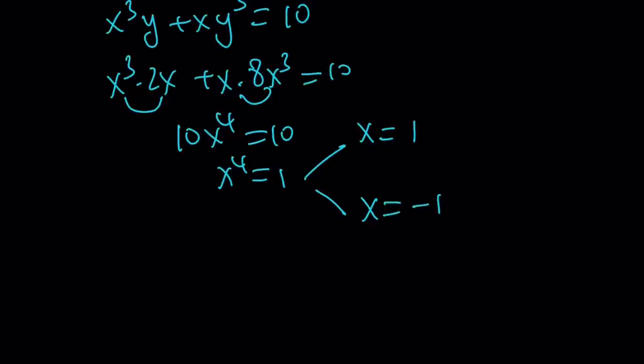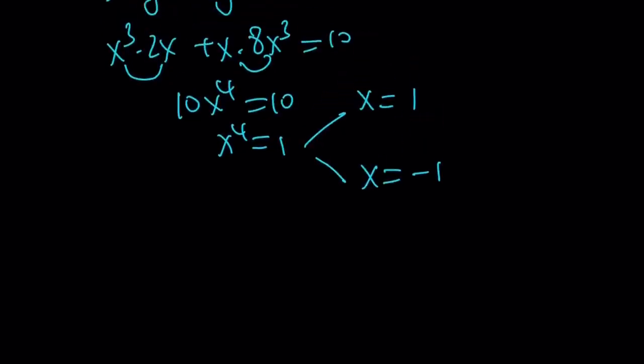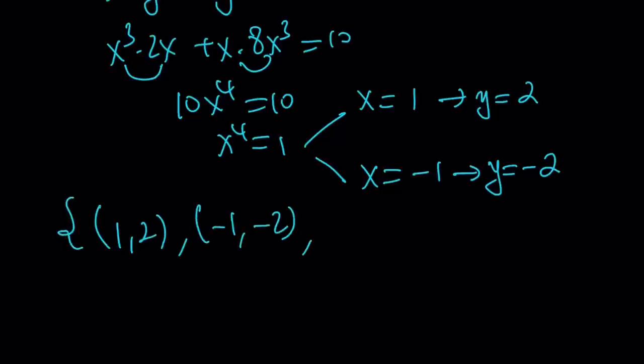Now, the -1 comes from the fact that these variables are being squared or multiplied together to get the fourth power. But if you just use x = 1, you're going to notice that y = 2 because y is 2x. And then if x = -1, then y = -2. So this gives you two ordered pairs: (1,2) and (-1,-2). But since x and y are interchangeable, this also means (2,1) is a solution and (-2,-1) is also a solution.